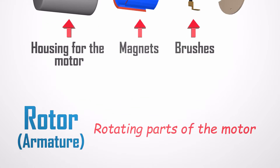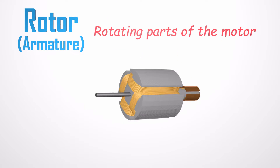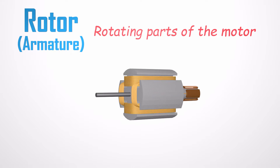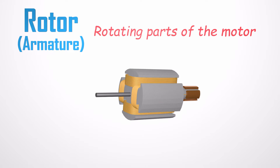Rotor comes from the word rotate, meaning it dynamically moves when the voltage is applied to the motor. This will produce mechanical movement for a DC motor.